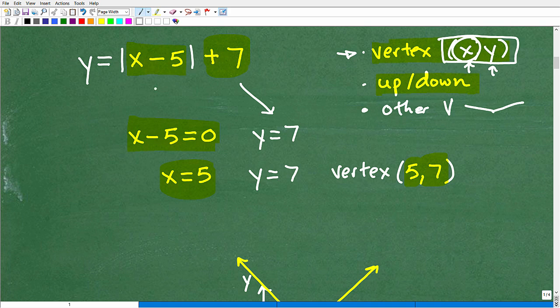Now, if there was no number, let's say it was this, you're like, wow, there's no number there. Well, it would be zero. That would be plus zero. But in this case, we have a 7. So there's always something there. Sometimes it's a zero. Okay, so we know our vertex is 5, 7. I mean, how easy is that?